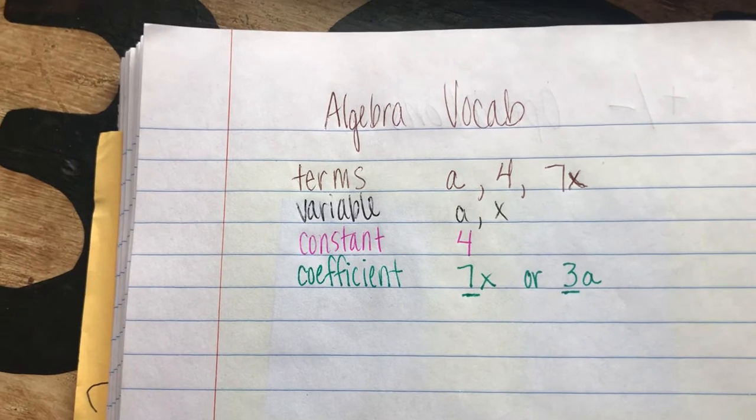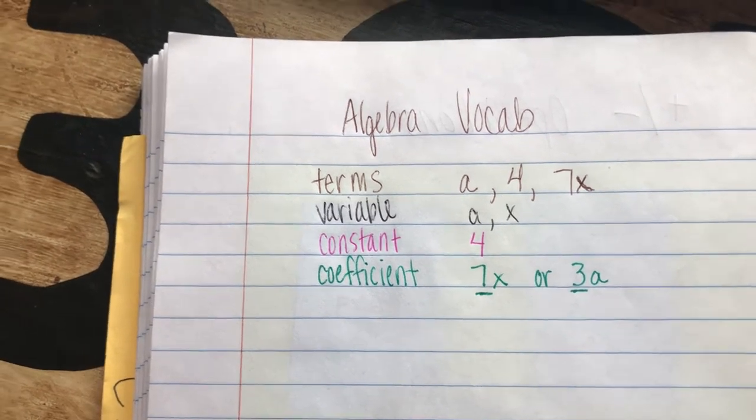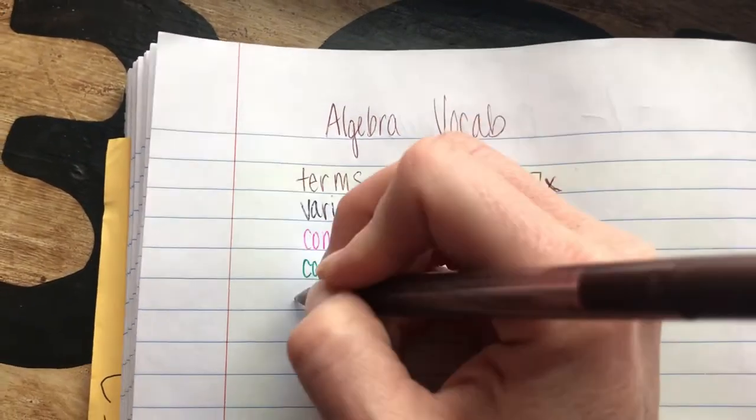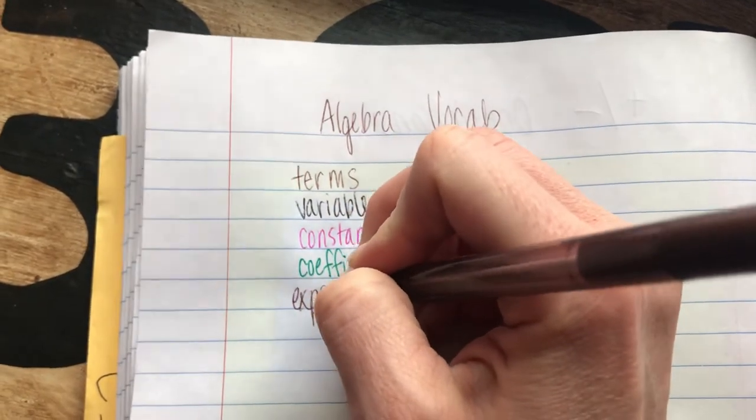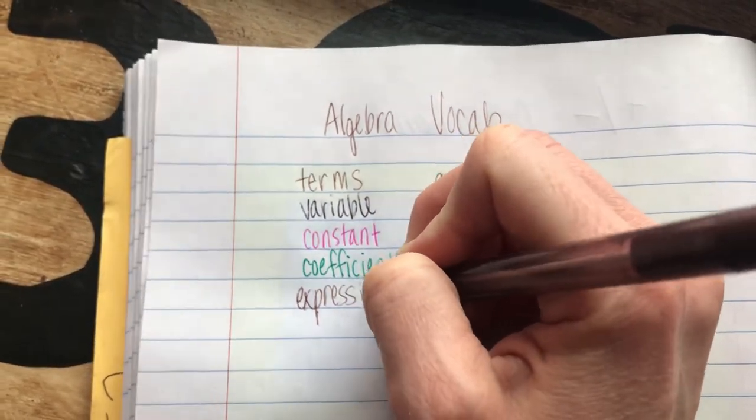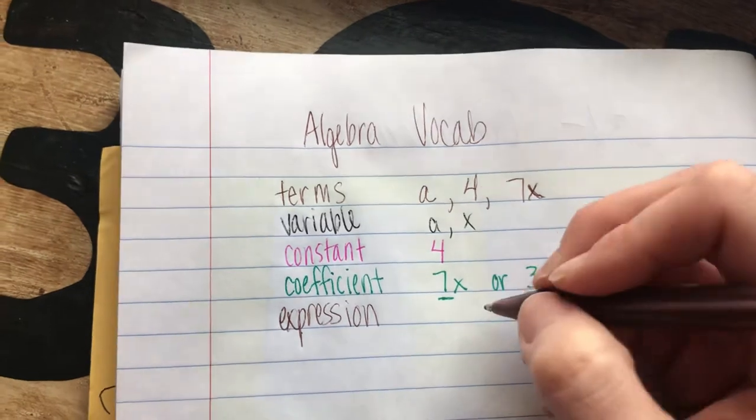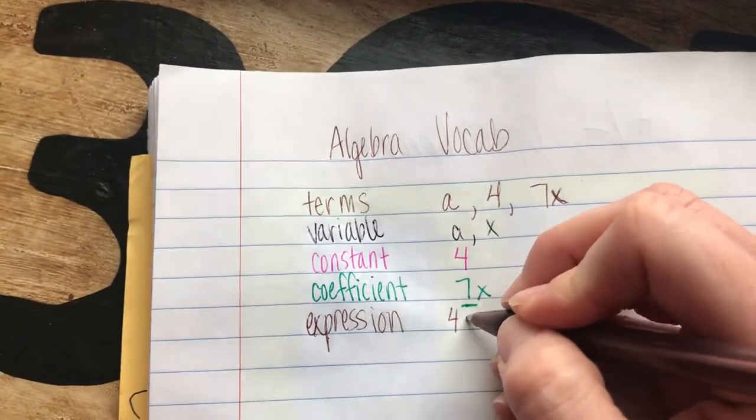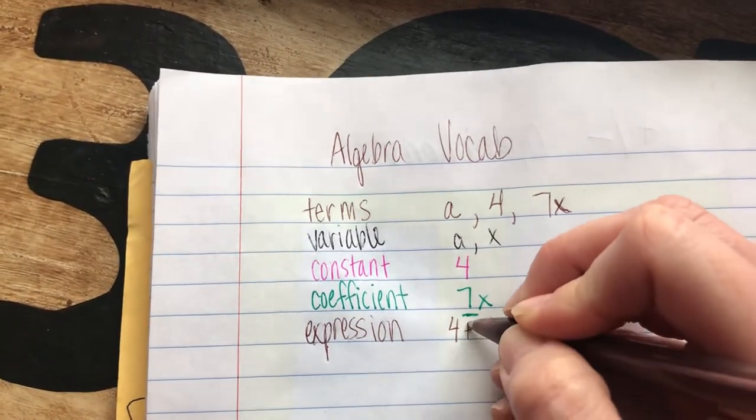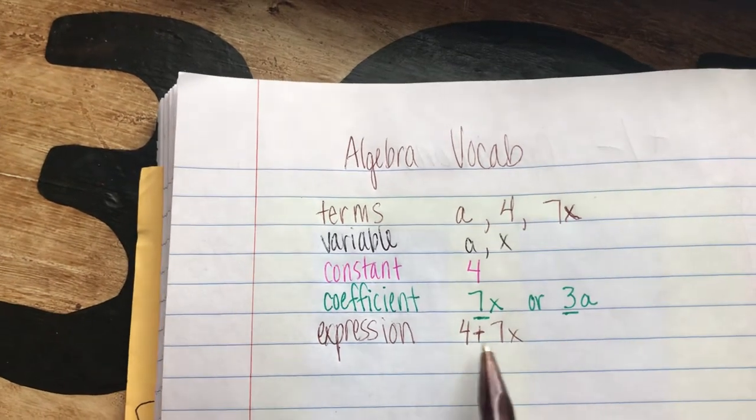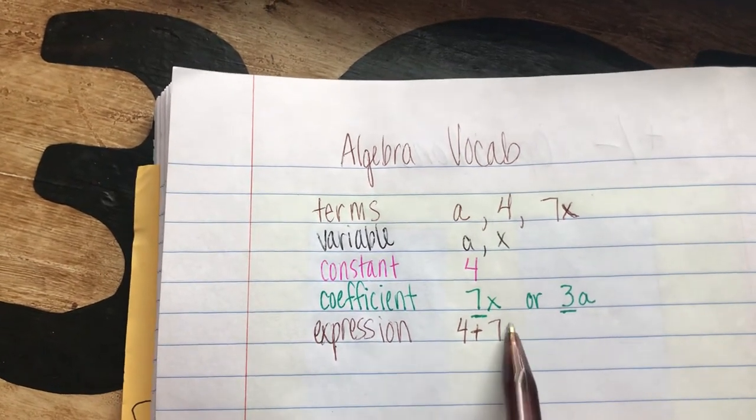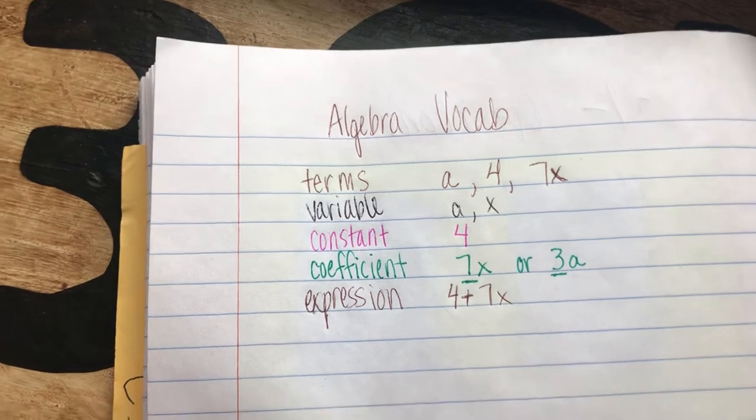Next is the term expression. An expression is a combination of terms without an equal sign. For example, 4 plus 7x is an expression. There are two terms in this expression.